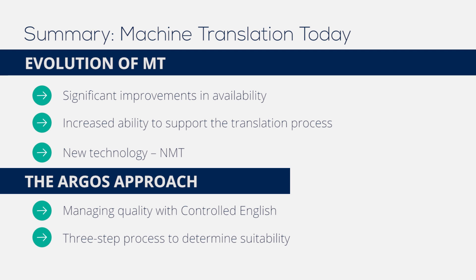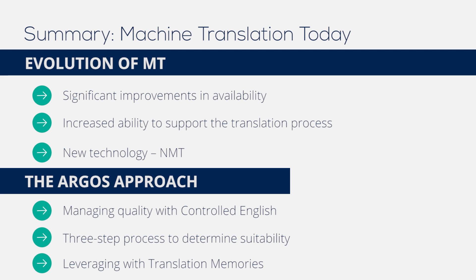Our three-step process provides our clients with reassurance that their content has been processed and tested during the pilot stage to determine its suitability for MT. Once we've determined that MT is suitable for our clients, we increase the quality of the raw output by first leveraging from translation memories and then processing the remaining segments through the MT engine. Our clients know that with MT they'll achieve greater efficiencies, save on translation costs, and reduce the time to market for their content. They can be confident that quality isn't compromised with productivity gains and savings, but rather improved and controlled through the entire MT process.